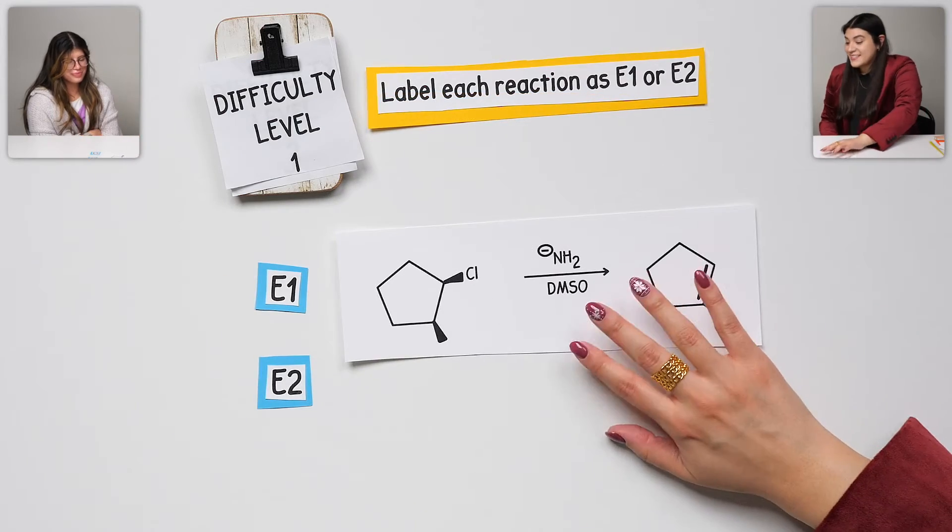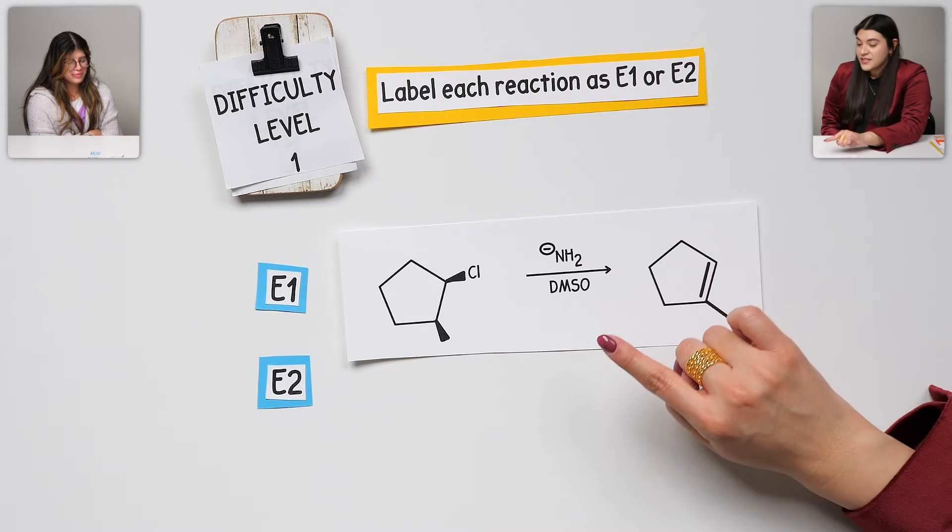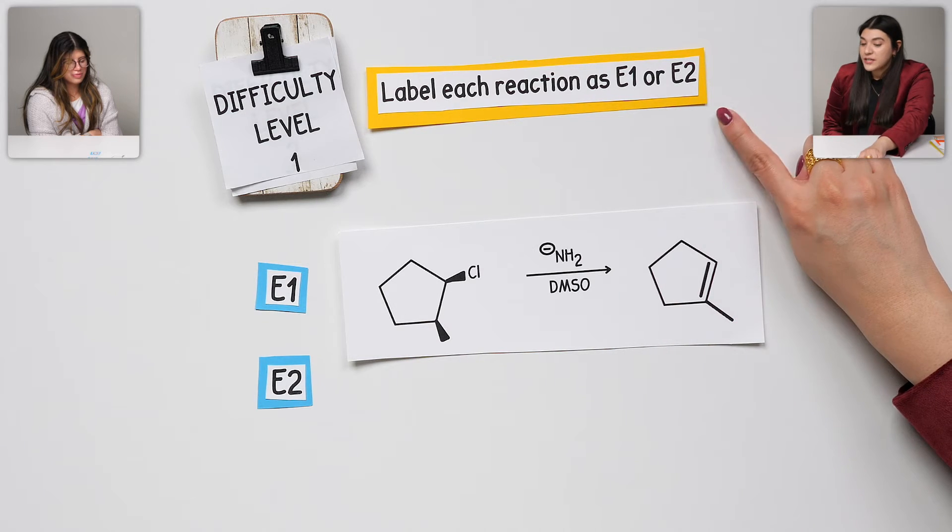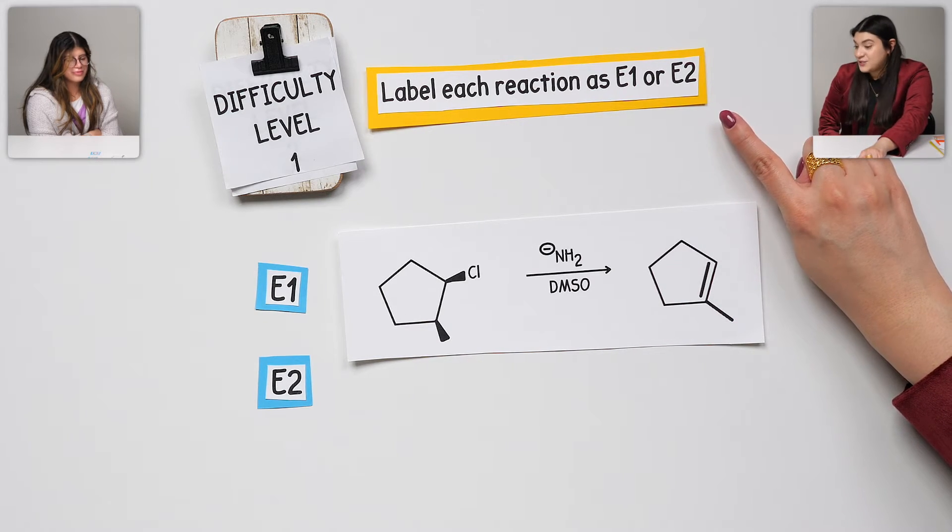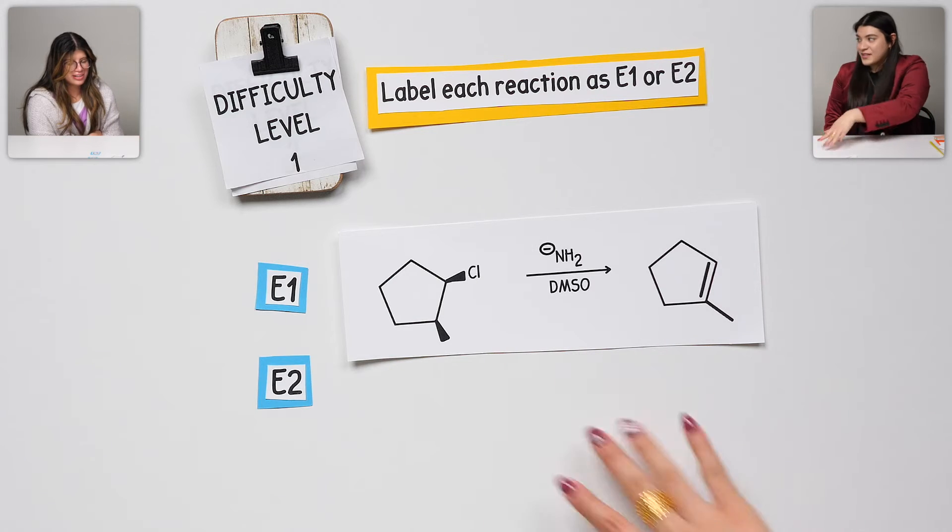We're going to move on to this next question. Still difficulty level one. This time, we're going to label each reaction as E1 or E2. Let's do the same thing. What are you thinking?